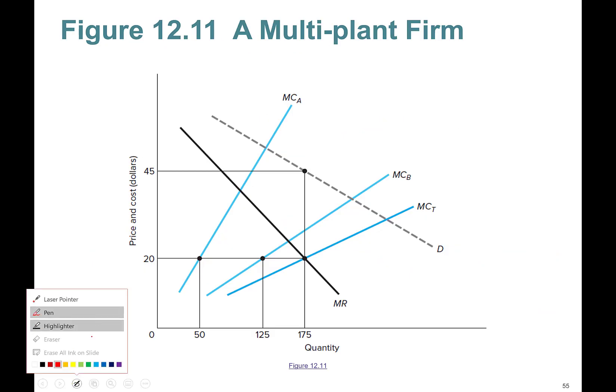This is a multi-plant firm example. This is a marginal cost curve in plant A - very steep, meaning higher marginal cost. It's cheaper to produce in plant B. How do we add them? We add them horizontally. That means the total marginal cost curve looks something like this. You don't add them vertically, you add them horizontally. So at each cost level, how many can I produce? Add them up and you get total quantity. We're going to put our full attention to this total marginal cost curve.